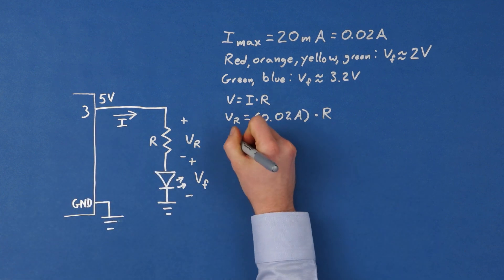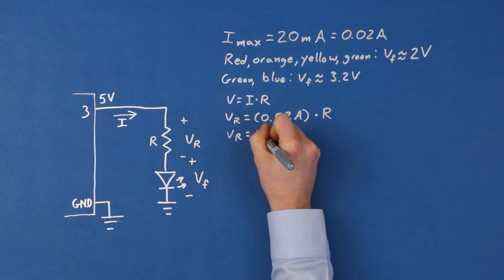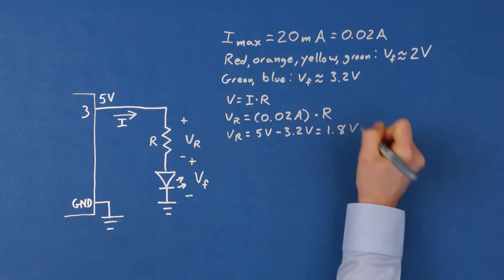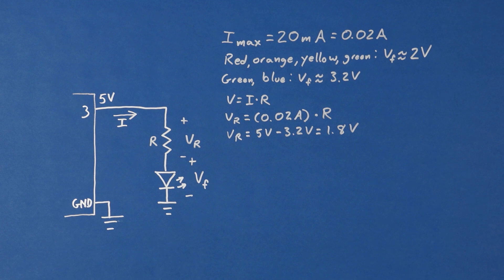And let's say we're using a blue LED with a forward voltage of 3.2 volts. We can say that the blue LED will use up 3.2 of those 5 volts. This means we're left with 1.8 volts for the resistor.